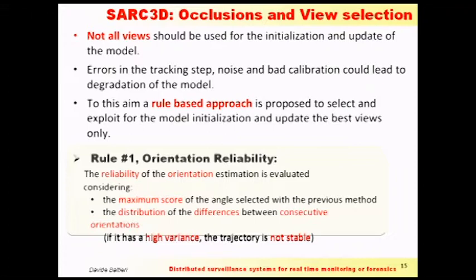The fifth step of my system selects the most important views for model creation, because you can't use every view — there is noise in the tracking, the orientation estimation is not perfect, and so on. I developed a rule-based system with three rules to select the best views for model update. The first rule deals with orientation and estimates its reliability using simple thresholds on the maximum score of the angle — the argmax — and also on the distribution of consecutive estimations of the angle.